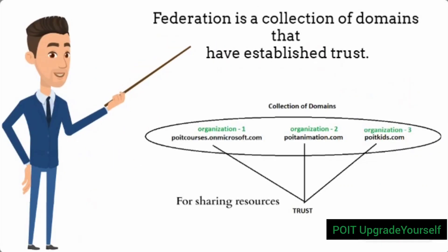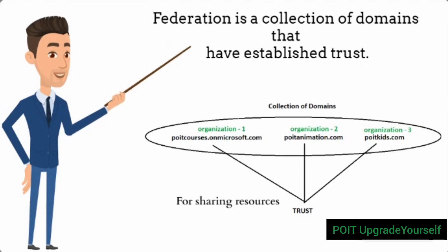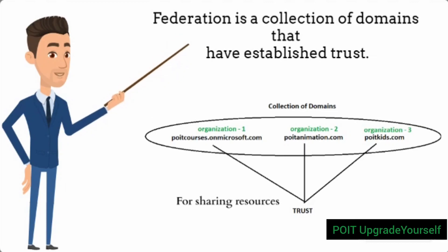Federation is a collection of domains that have established trust. The level of trust may vary, but typically includes authentication and almost always includes authorization. If you are not aware of what authentication and authorization are, links are placed in the description — you can go through them.